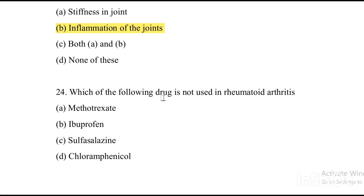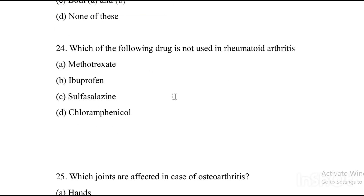24th question: Which of the following drug is NOT used in rheumatoid arthritis? Option A: methotrexate. Option B: ibuprofen. Option C: sulfasalazine. Option D: chloramphenicol. The answer is Option D, chloramphenicol. Drugs used for rheumatoid arthritis include methotrexate, ibuprofen, and sulfasalazine.